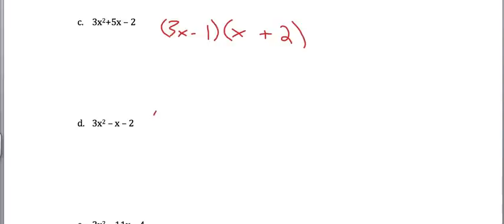Last one, I've got the same issue. This time I'm going to try 3x, and I'm going to try plus 2, and I'm going to try x minus 1. Let's see if that works. I get negative 3x, and I get positive 2x. So my middle term checks out, and again, I always know that my first one checks out.